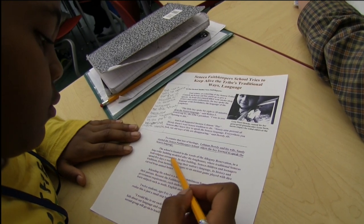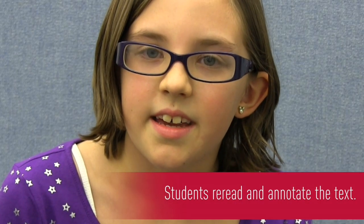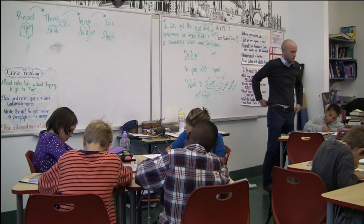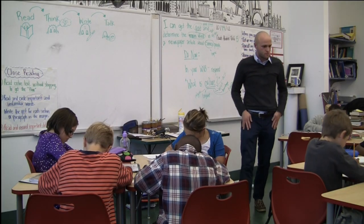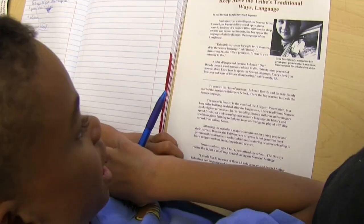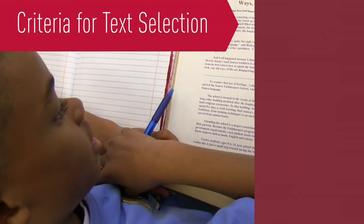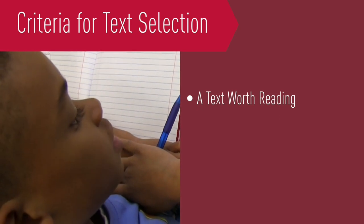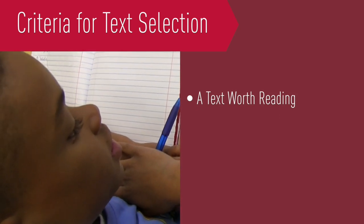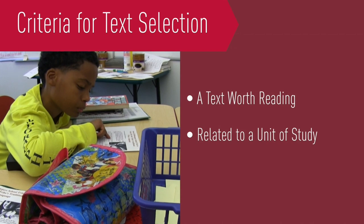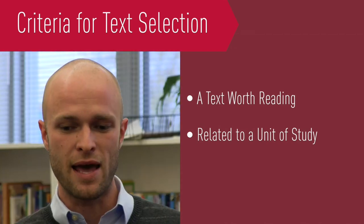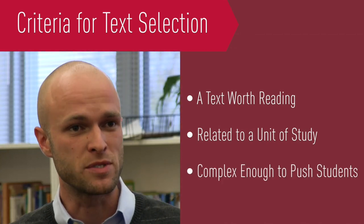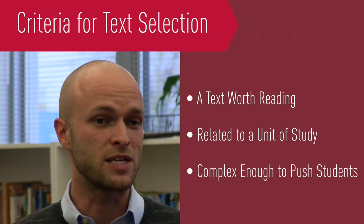Like 'traditional,' the school, and some of the names. Choosing a text is always a really important process for me in teaching something like this. I was really looking for something that was an authentic text, something from a primary source like a newspaper article — something within what they were studying so that it had a real purpose for them in reading it. And I needed something that was complex, something that pushed them and taught them new academic vocabulary.